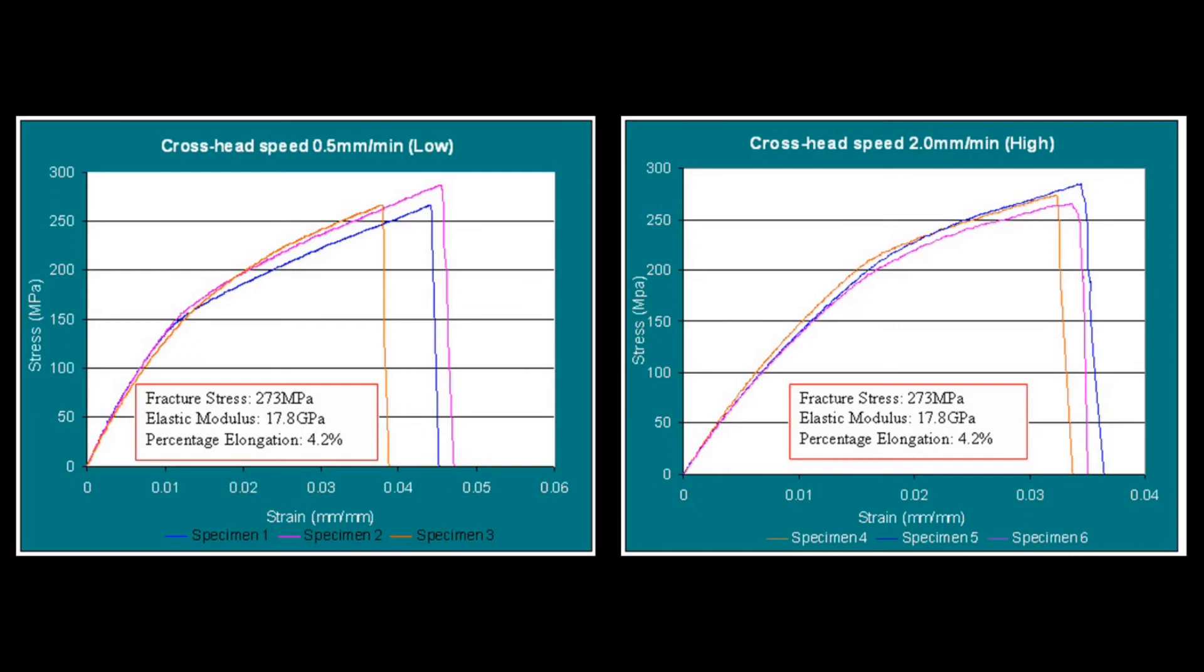You have seen the fracture, the mode of fracture is delamination between the fiber and the matrix, which means that the stress actually is transferred from the matrix to the fiber. At some point the interfacial strength between the fiber and the matrix is less and therefore the fracture initiates at that point.